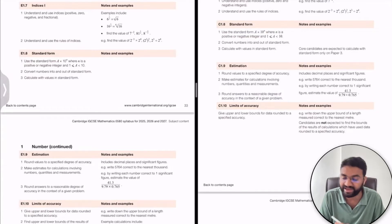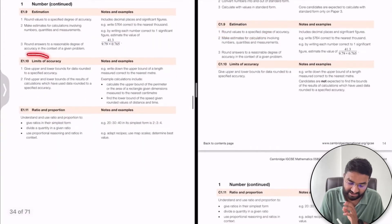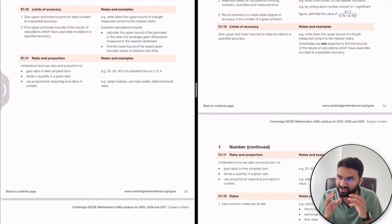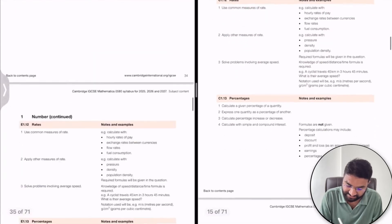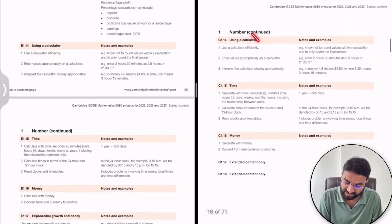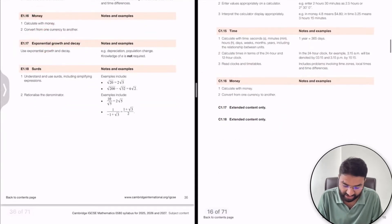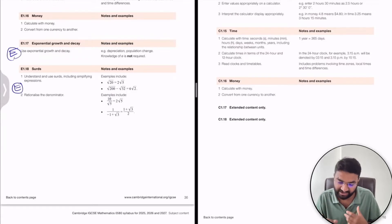Continuing with Number: estimation is the same for both. Limits of accuracy — upper bound and lower bound — are covered and are not too difficult, very basic general topics. Then ratios and proportion, rates, and percentages. Using a calculator is included, covering more difficult questions. Then time and money. Exponential growth is more specifically added for the extended student. These complete the number topic.